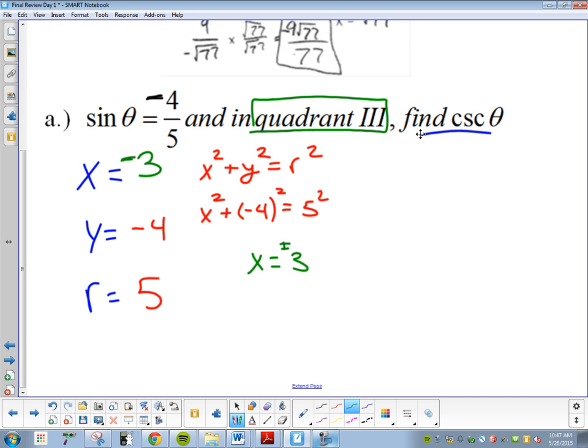The last step of this question says find cosecant of theta. If we're finding cosecant, what are we looking for in this problem? R over y. So my r is five, my y is negative four. So my answer is negative five fourths.